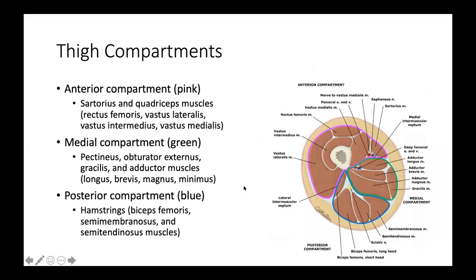To understand how the hip moves, you need to understand the muscles of the thigh, which is made up of three compartments. The anterior compartment, mostly innervated by the femoral nerve, contains the sartorius and the quadriceps. The medial compartment, mostly innervated by the obturator nerve, includes the pectineus, obturator externus, gracilis, and adductor muscles. The posterior compartment, mainly innervated by the sciatic nerve, contains the hamstrings: biceps femoris, semitendinosus, and semimembranosus.